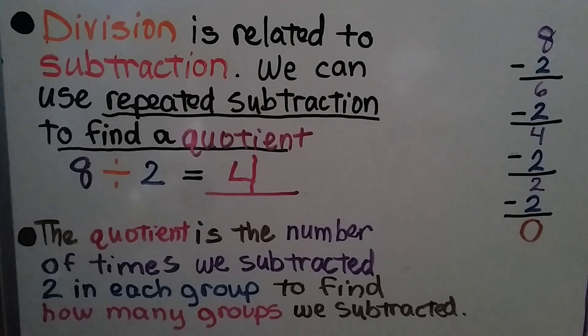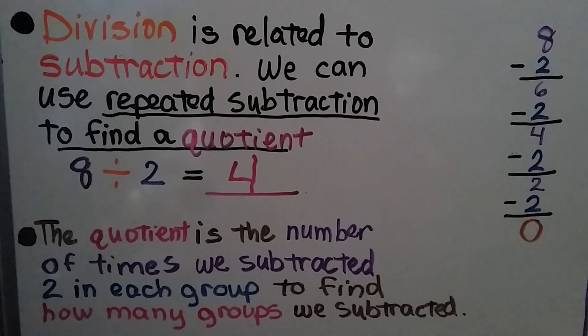The quotient is the number of times we subtracted 2 — that is, how many groups we subtracted.